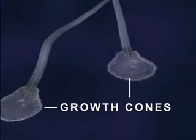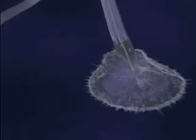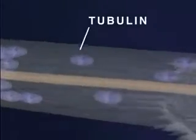Two principal proteins involved in growth cone function are actin, which is responsible for the pulsating motion seen here, and tubulin, a major structural component of the neurite membrane. During normal cell growth, tubulin molecules link together end-to-end to form microtubules, which surround neurofibrils, another structural protein component of the neuronal axon.